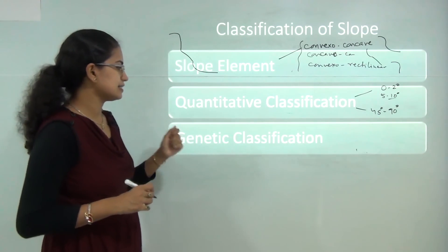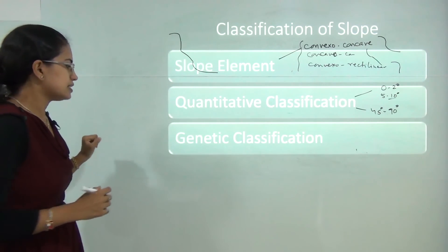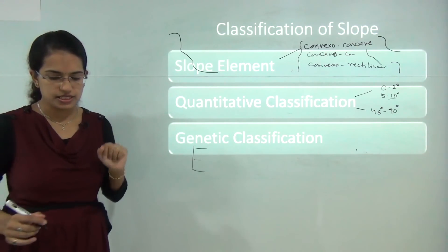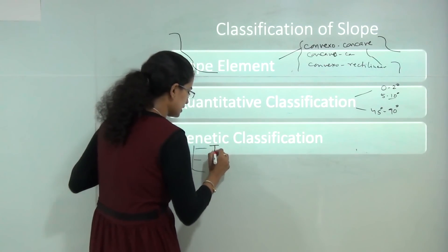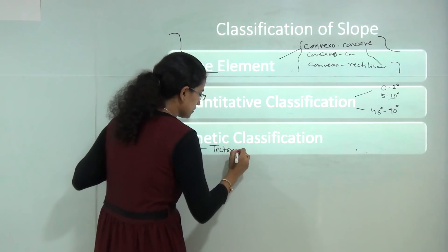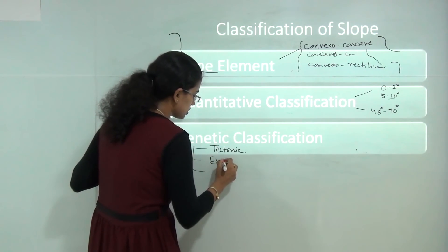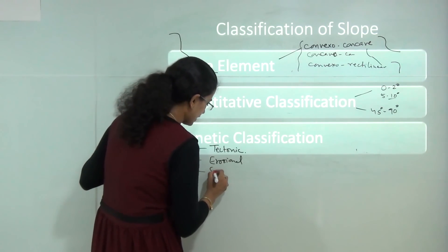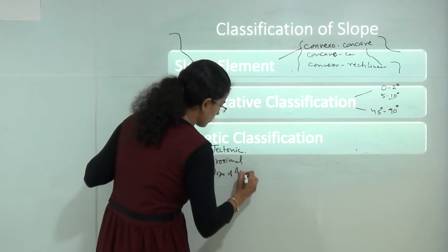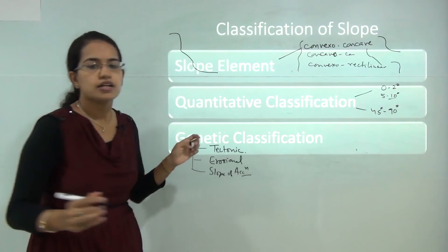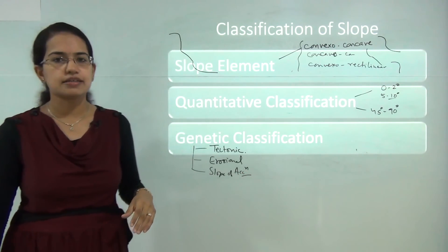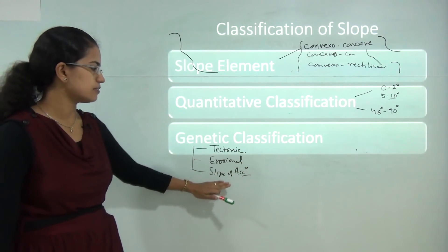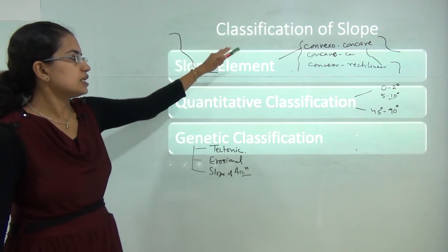Finally, genetic classification classifies the slope into three types: the tectonic slope, the erosional slope, and the slope of accumulation. Tectonic slope is formed due to tectonic activities; erosional slope is due to predominant erosional activities in the region; and the slope of accumulation is formed due to depositional activities, mainly caused by differential denudational patterns.